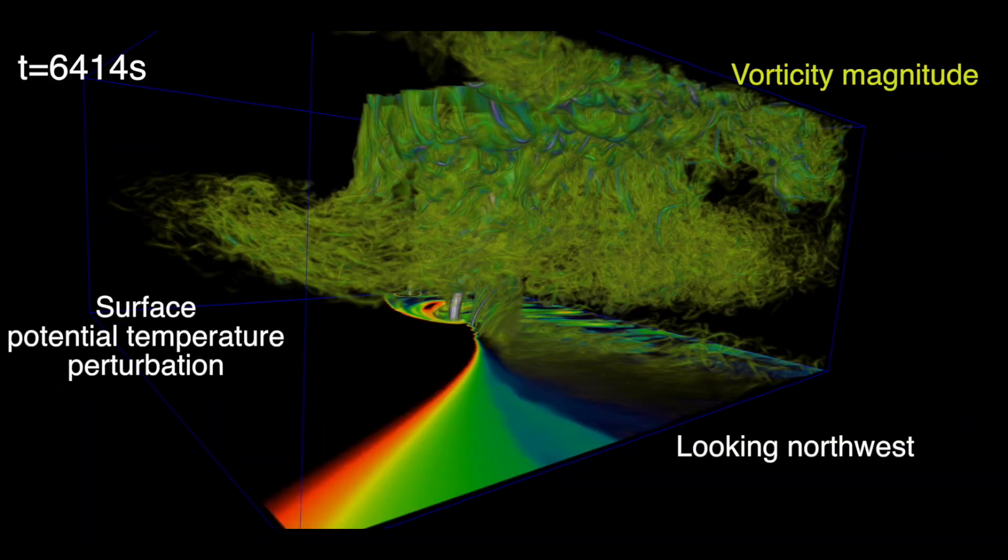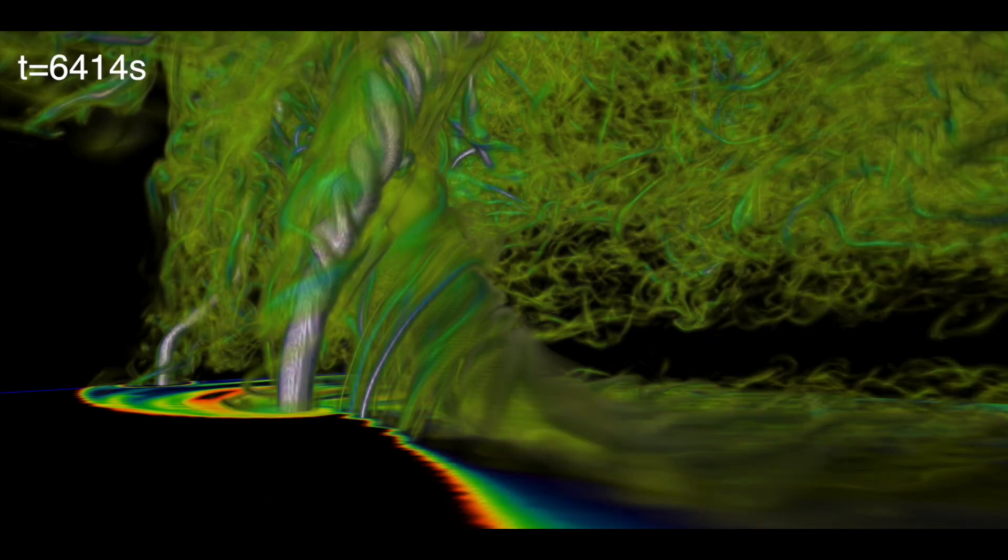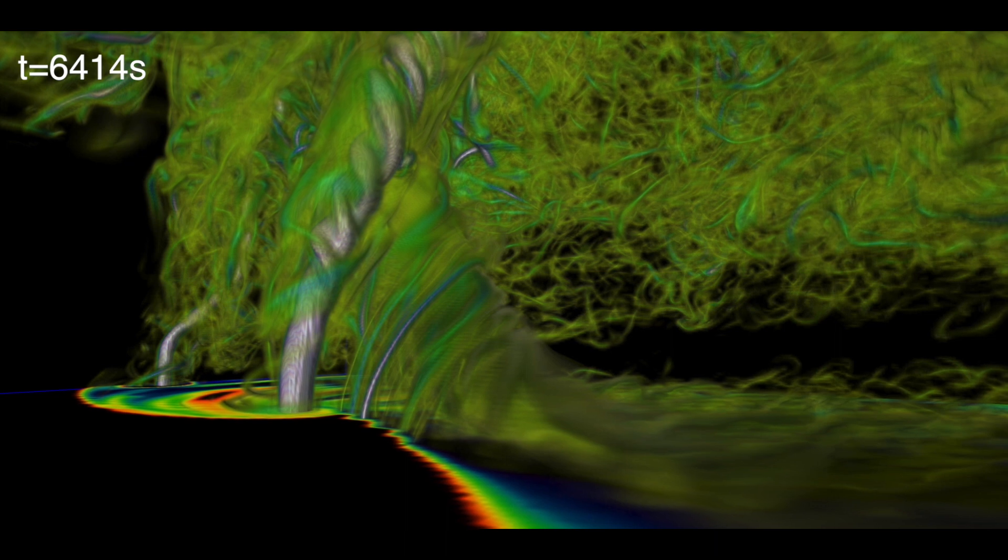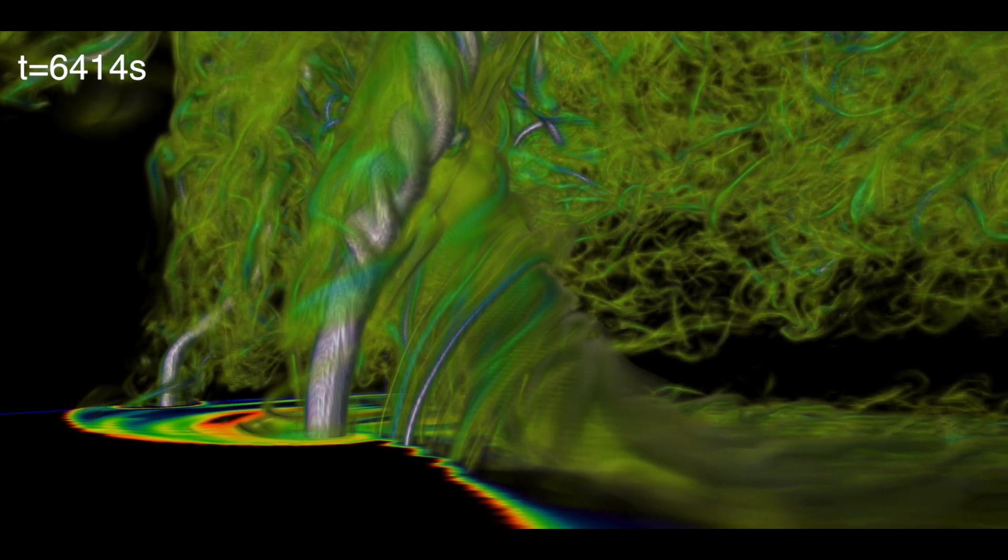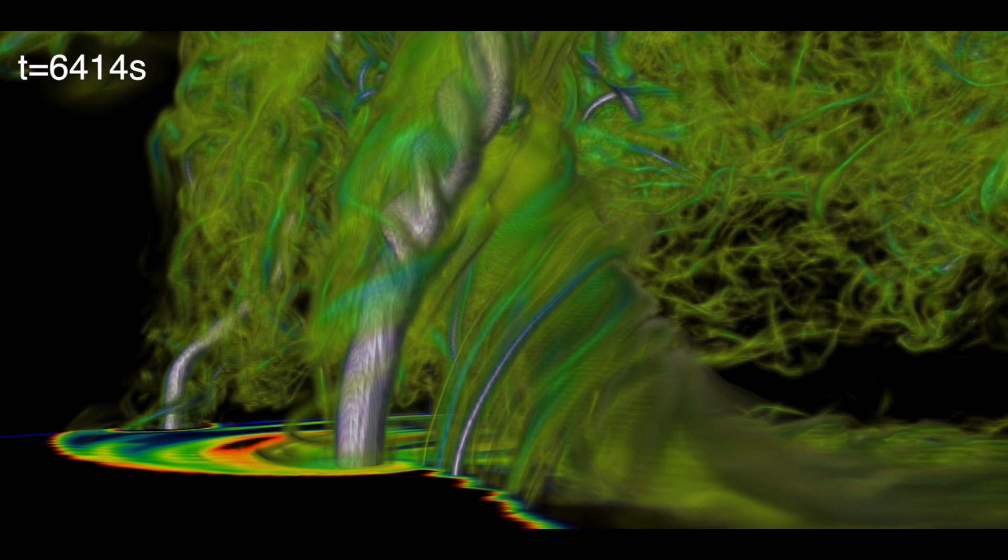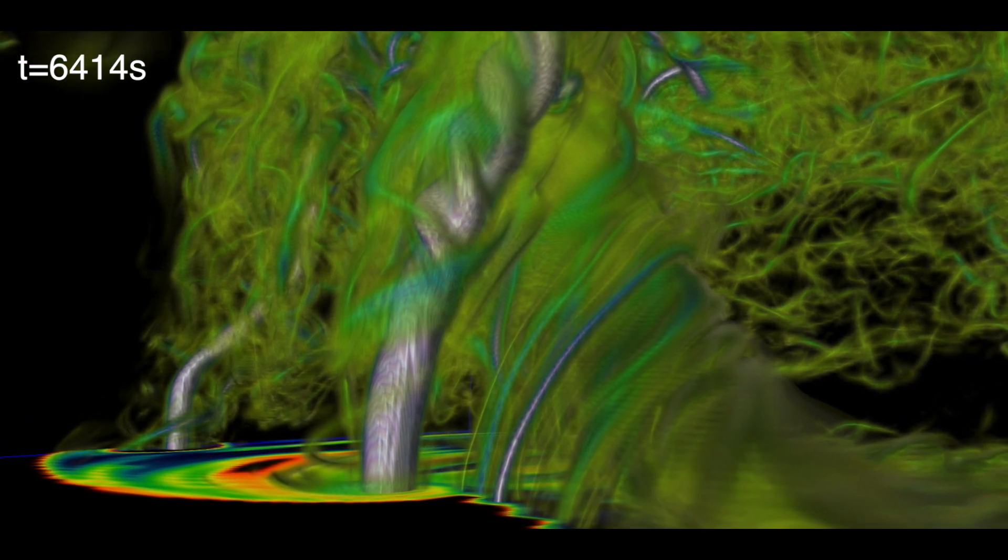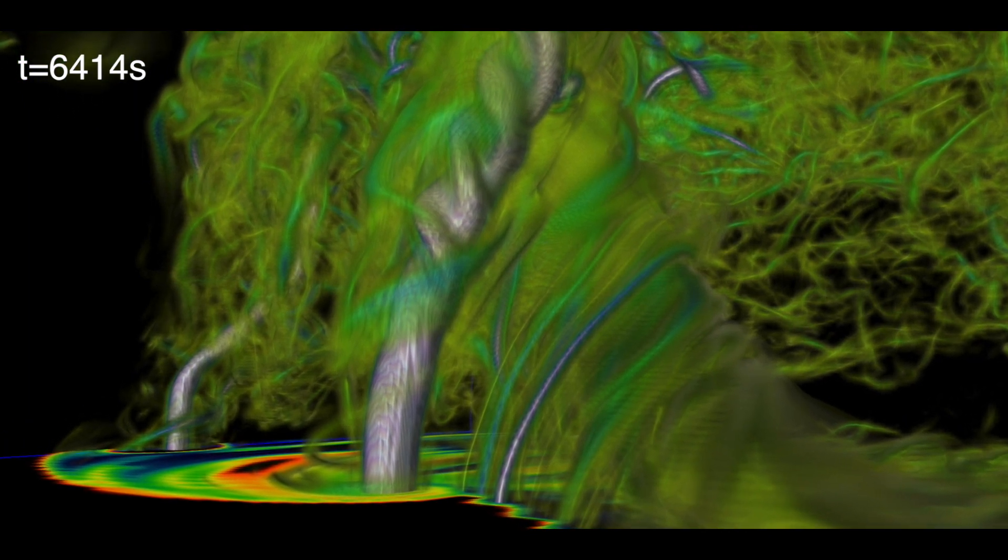So here we're looking at vorticity again and looking at surface potential temperature perturbation to sort of put those two there again to show these boundaries that are important. And this is an interesting shot. This is my favorite still of the whole movie. Here is that conveyor of vorticity that's going into the tornado cyclone. Here are those little guys. Here's the tornado. Here's what's called vortex breakdown occurring. And here's an anticyclonic circulation.